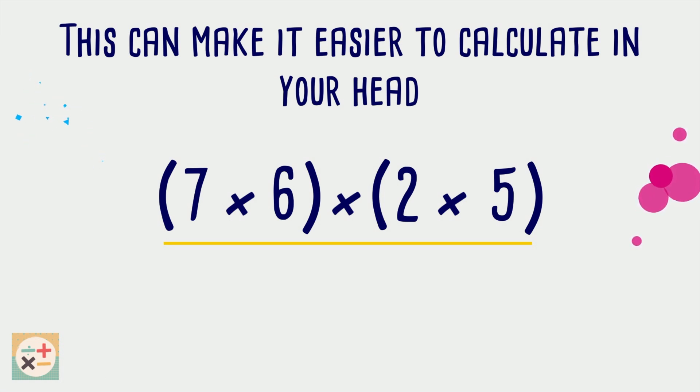Multiplying the 2 and the 5 together gives us 10. The remaining two numbers multiplied together gives us 42. We can then multiply these together to make 420.